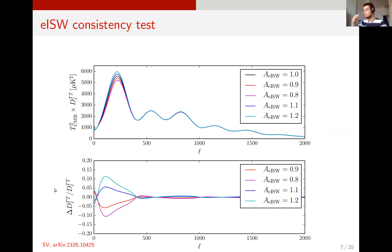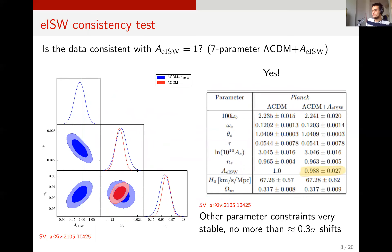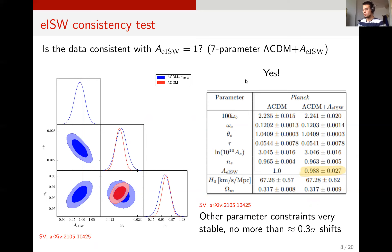These large scales are very well measured by Planck and WMAP and are consistent with each other, so it's good that the early ISW only probes these scales. From the data, a minimal Lambda CDM plus early ISW amplitude model is consistent with the early ISW amplitude being one. If I constrain this model against Planck temperature and polarization data, the early ISW amplitude is inferred to be 0.988 ± 0.027, perfectly consistent with the standard value of one.